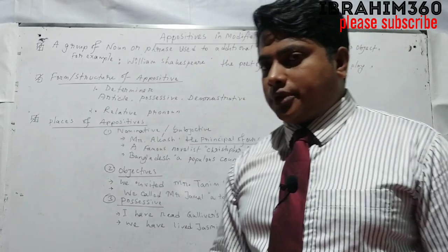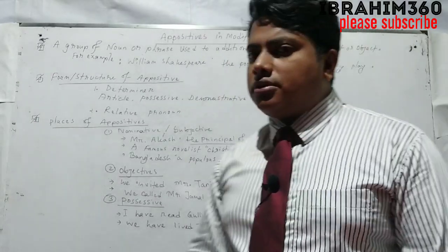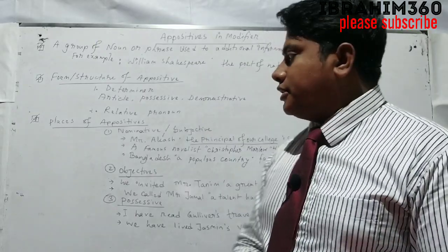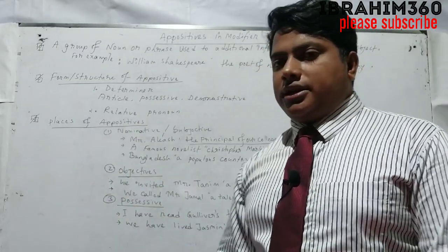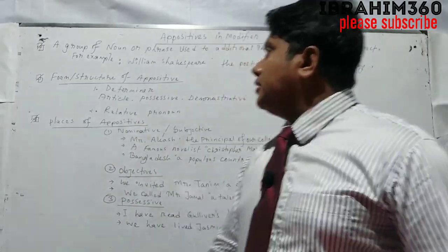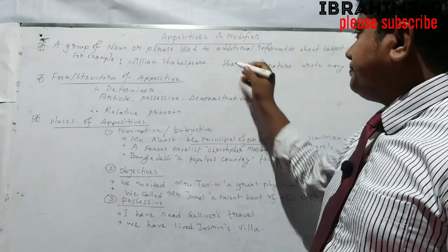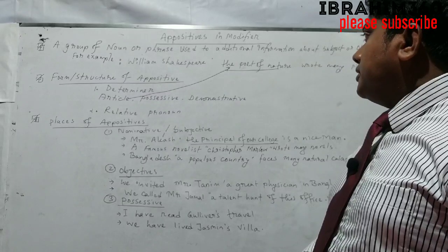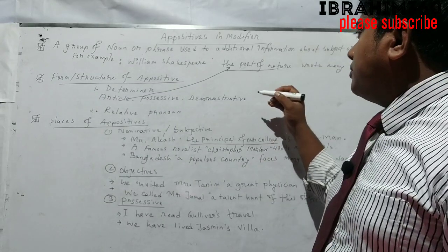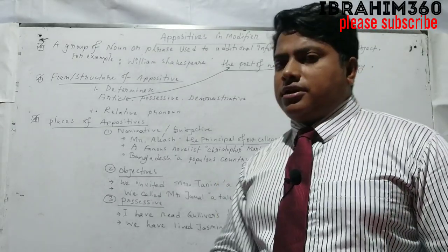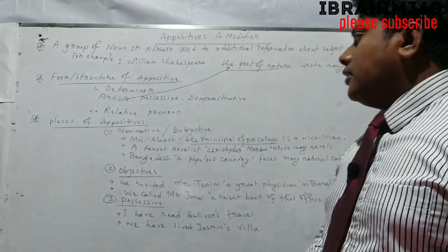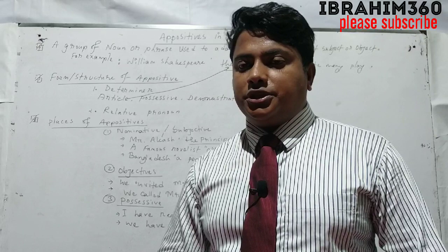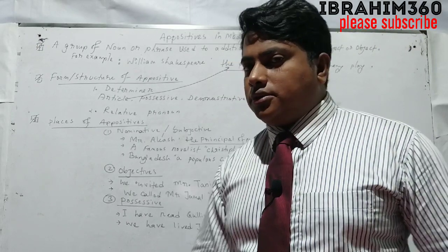Topics in English grammar include the noun, adjective, and adverb. A determiner is actually an article. Then we talk about the possessive, which is actually the personal pronoun: my, his, her, their, our, your — these are the possessives.